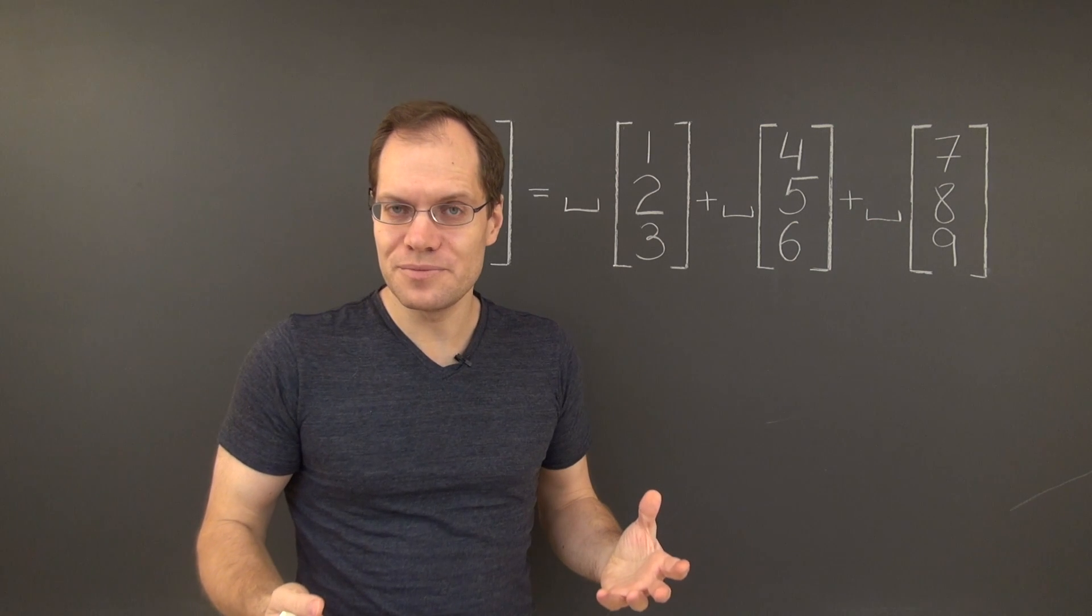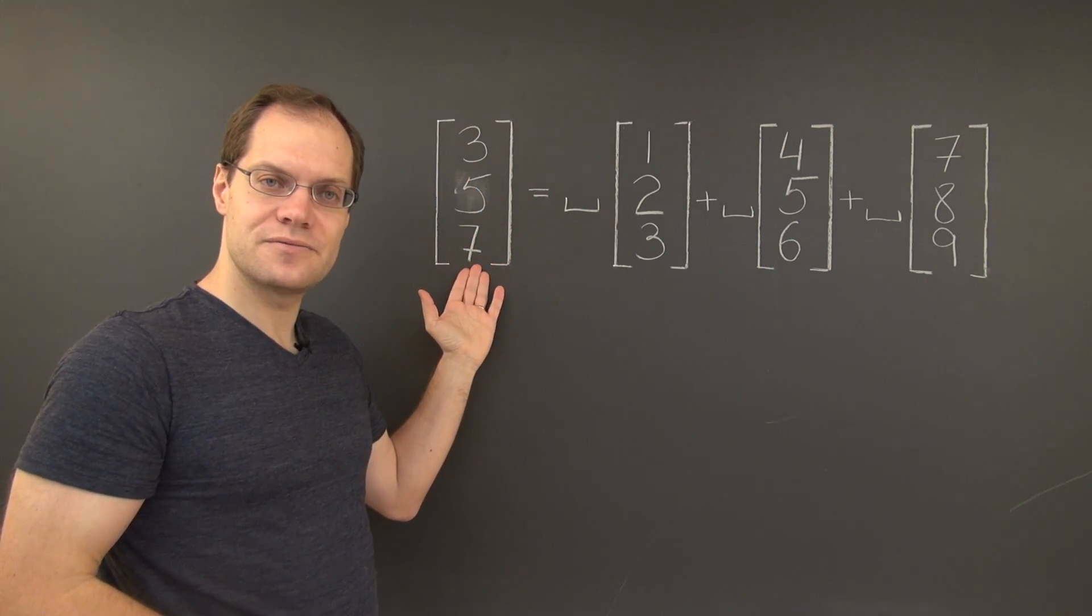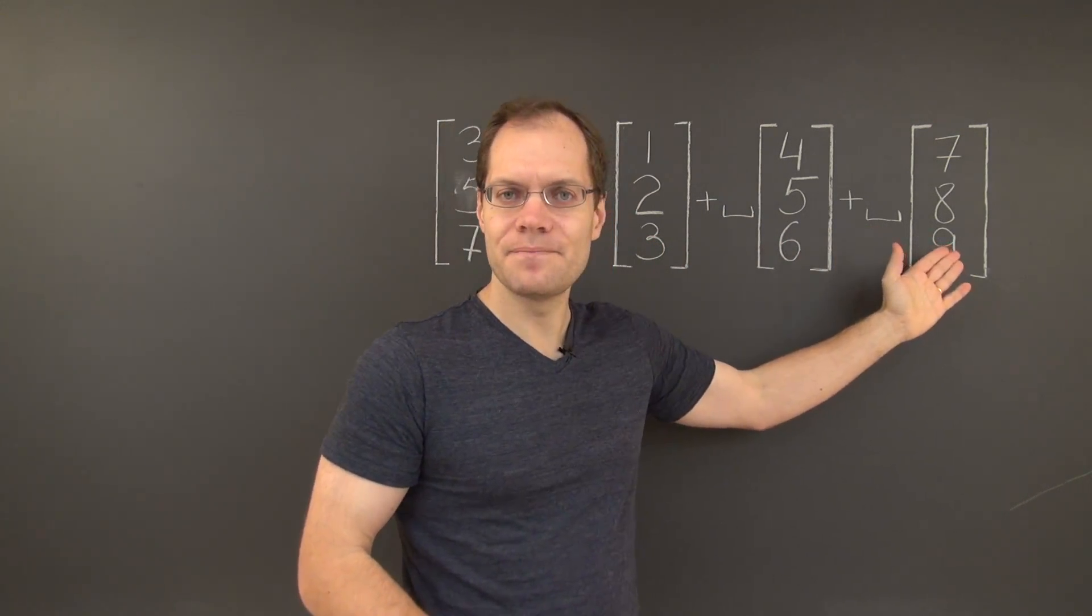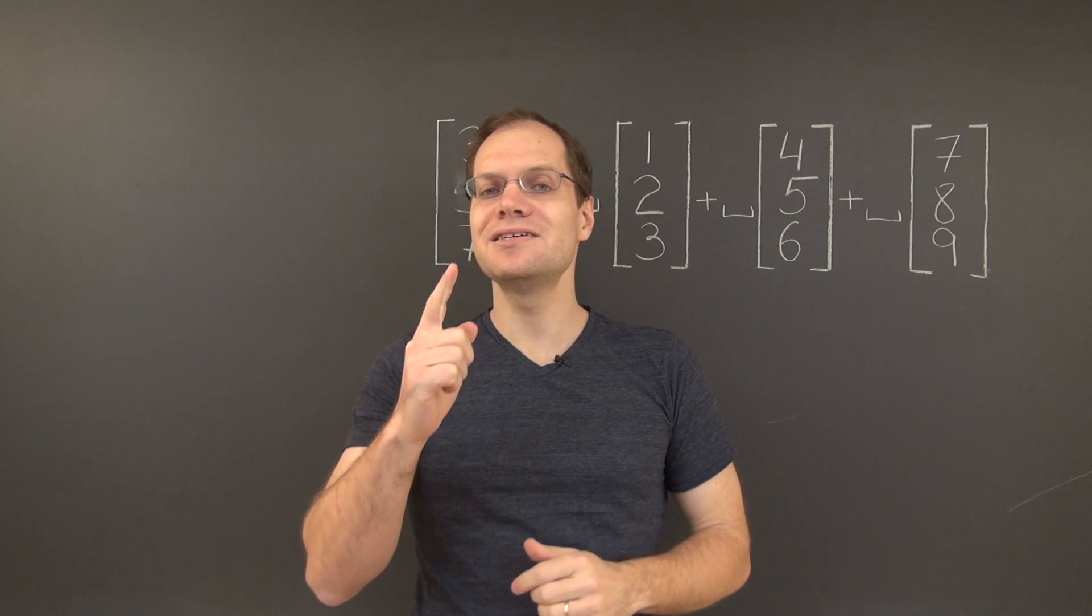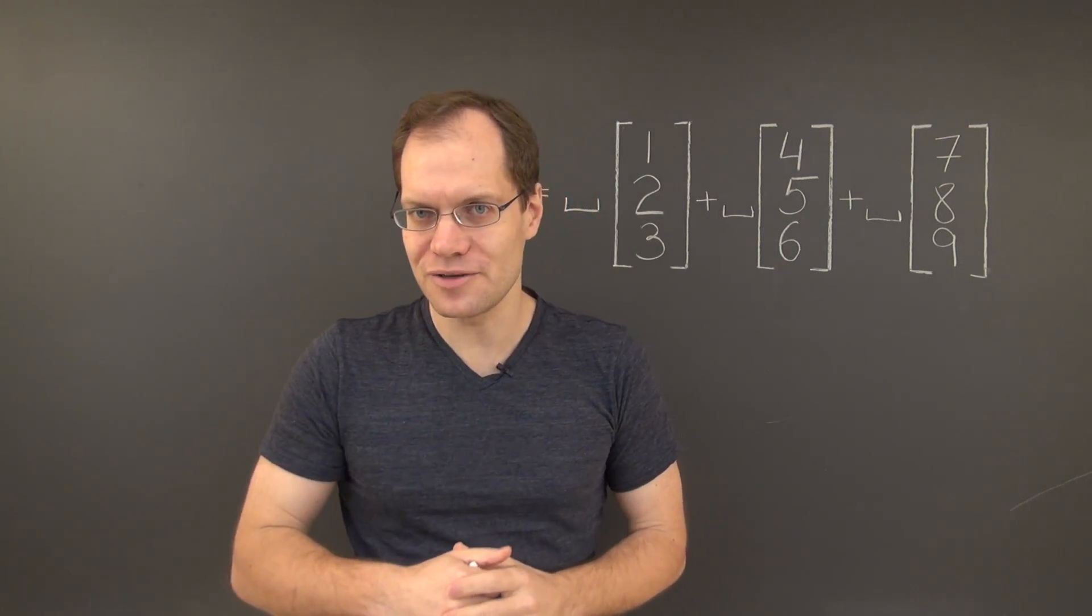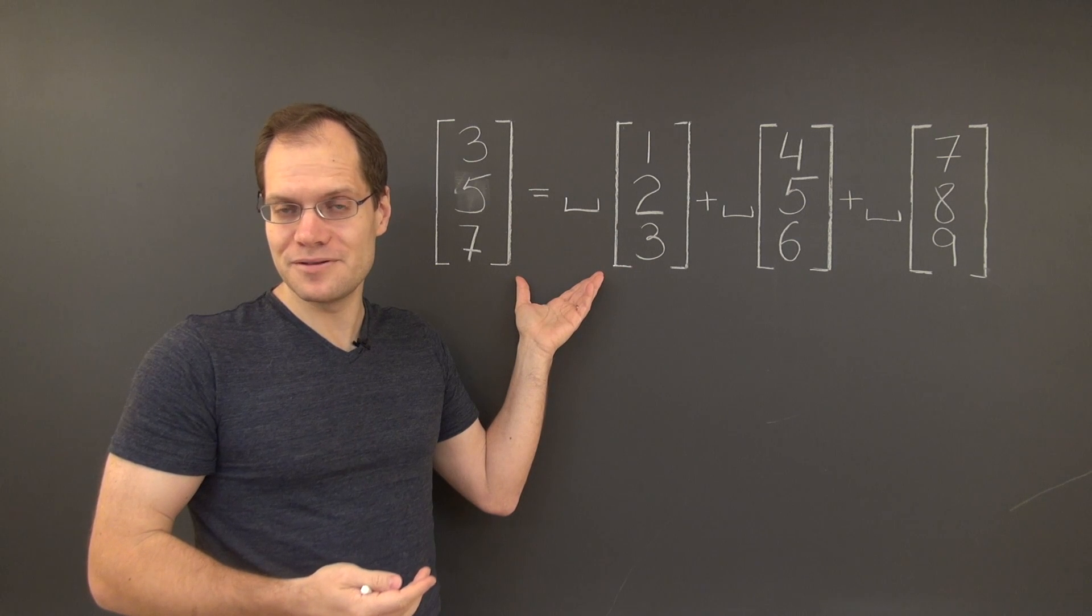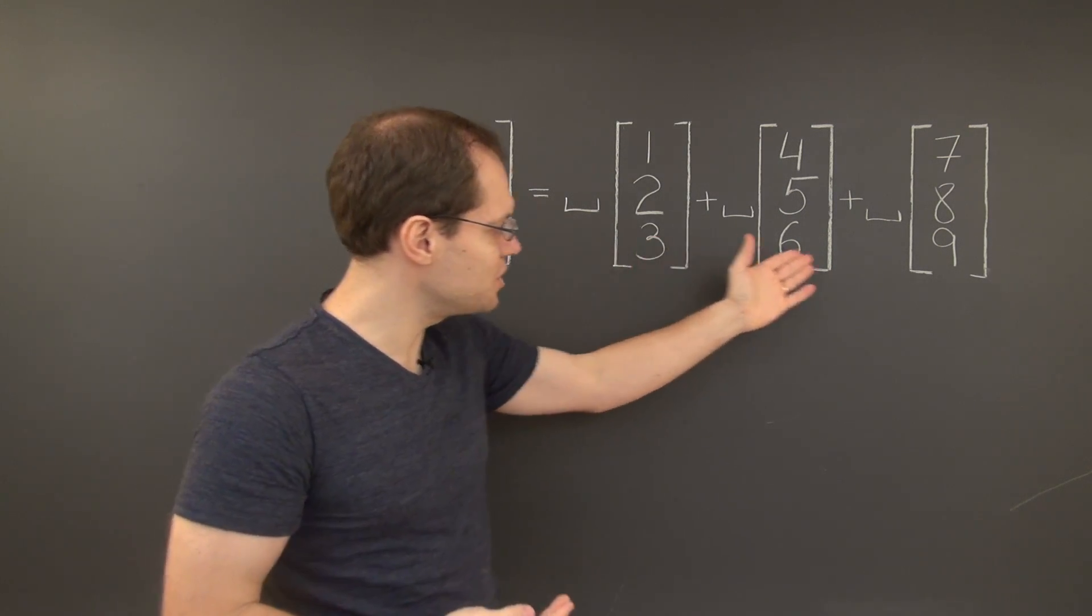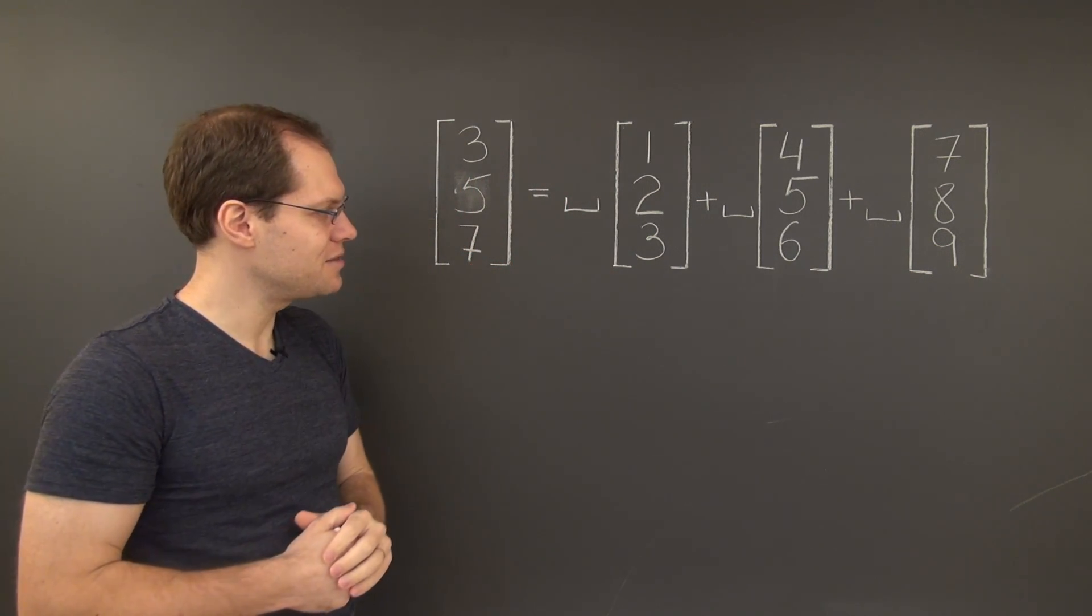Now the correct argument goes away because now the target vector shares the property that we identified in each of the decomposition vectors. And if we still insisted on the incorrect argument, we would say that this new decomposition problem doesn't have a solution because each one of these entries is divisible by 3, while this one is not divisible by 3.